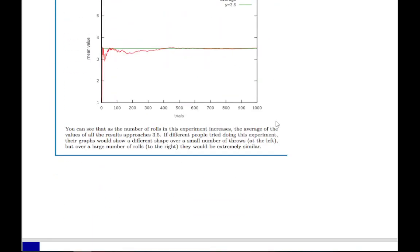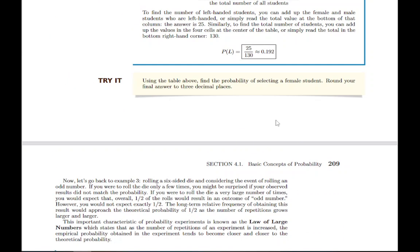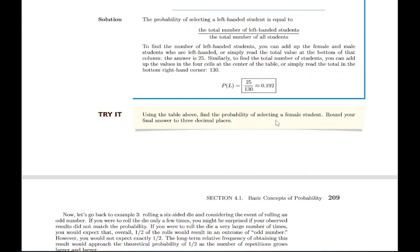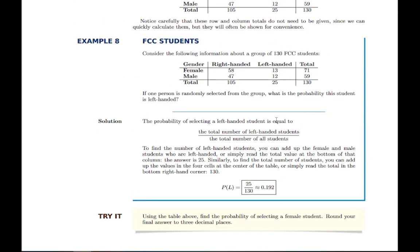So that brings us to the end of section 4.1. The basic principle is that there's theoretical and empirical probability. In both cases, you're dividing the number of outcomes, or the number of times something has happened, by the total, and that gives you the probability you're looking for.